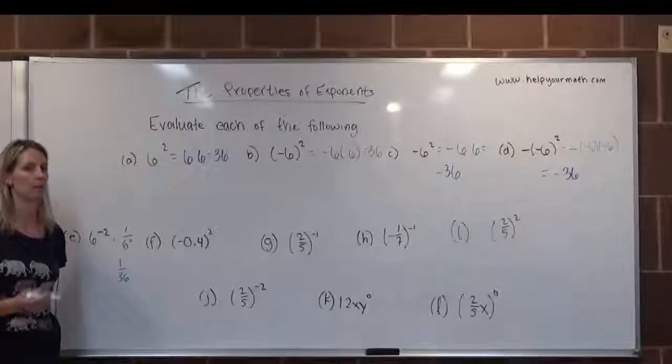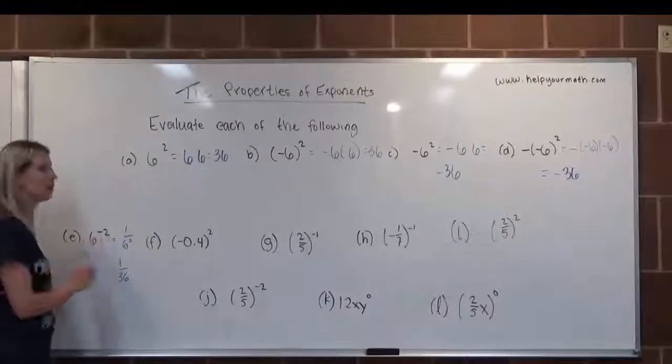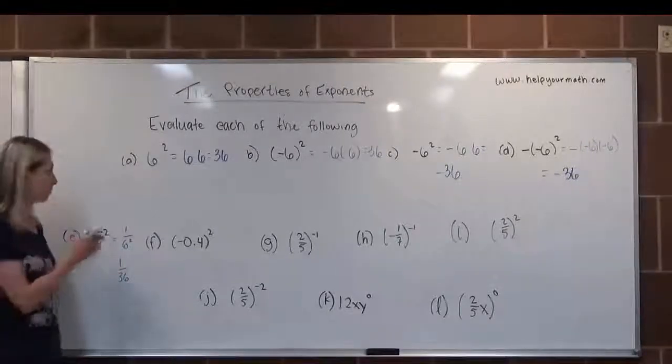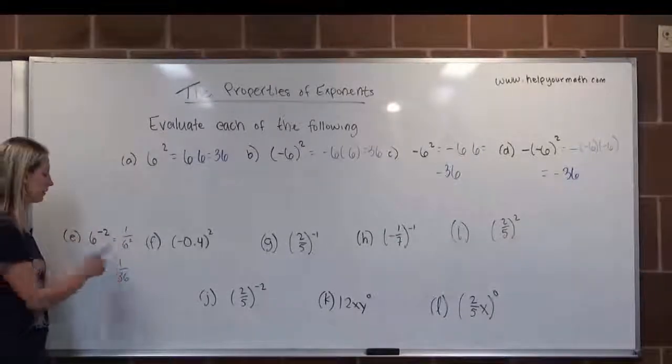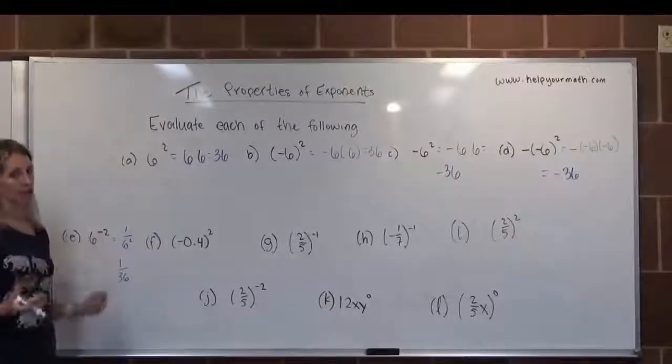Notice that a negative exponent does not affect the sign of the base. If the base is positive, it's going to stay positive in terms of the negative exponent. The square will have a different effect, but the negative itself just indicates you're taking the reciprocal.